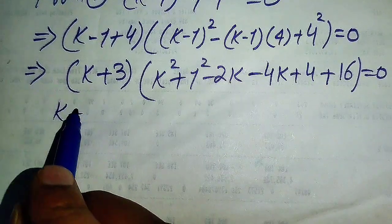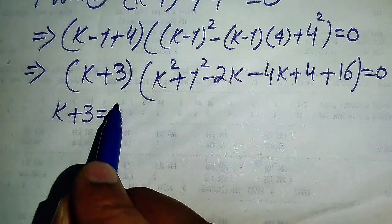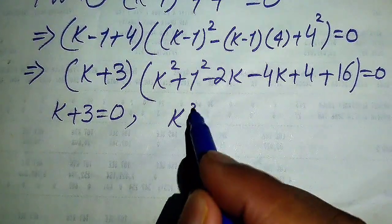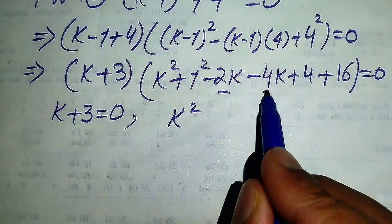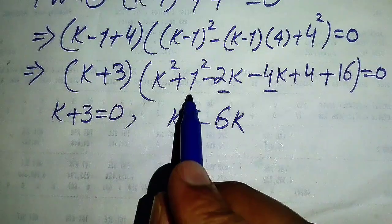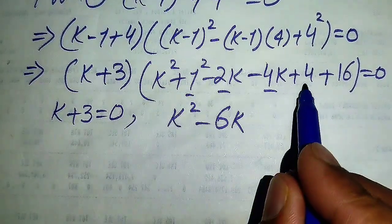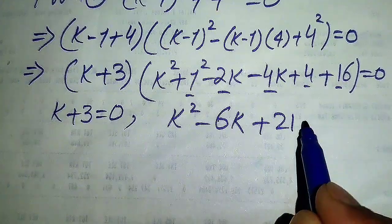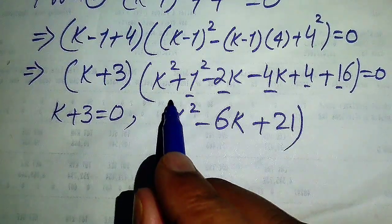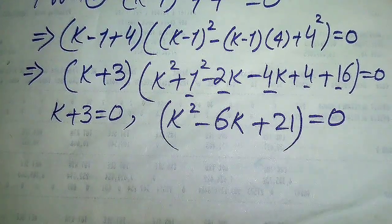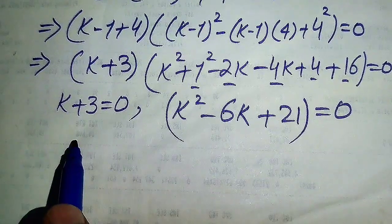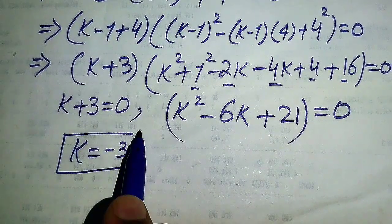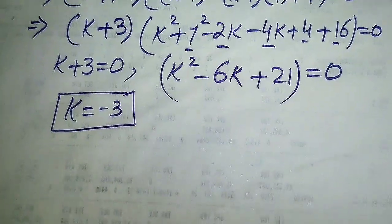We divide into two cases: first, k + 3 = 0, giving k = -3. Second, k² - 6k + 21 = 0. So k = -3 is the second real root. We now check whether this quadratic has real roots.